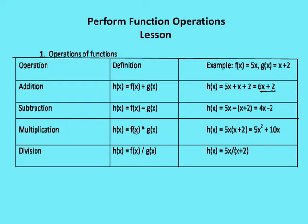Multiplication. In this case, h of x is equal to f of x times g of x. So now I'm multiplying the two functions together. I have f of x equals 5x times g of x, which is equal to x plus 2. I have 5x times, in parentheses, x plus 2. I use the distributive property to distribute 5x through both values in the parentheses. That leaves me with 5x squared plus 10x.